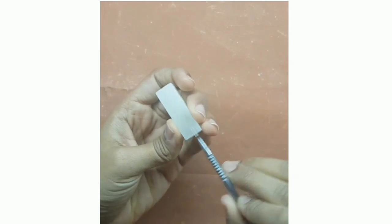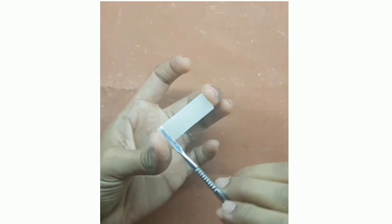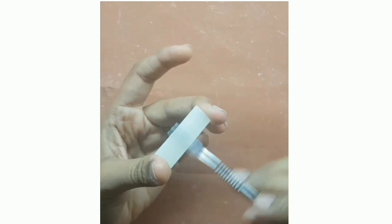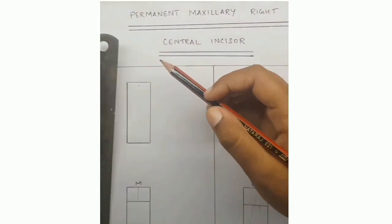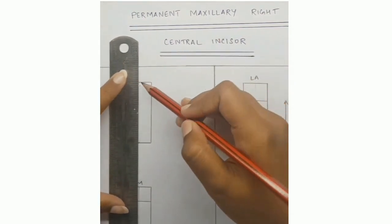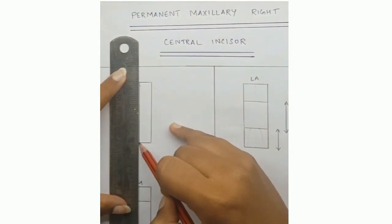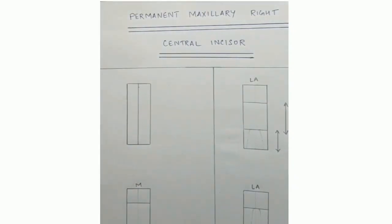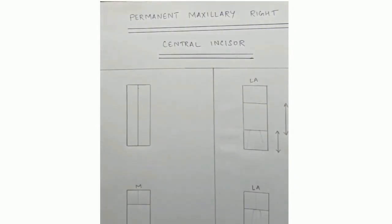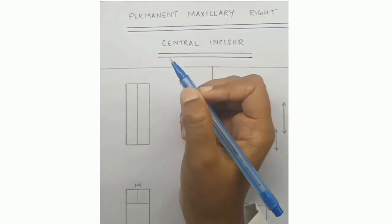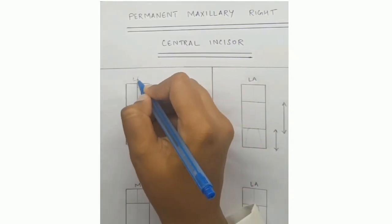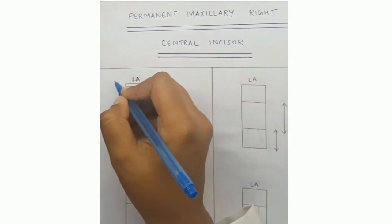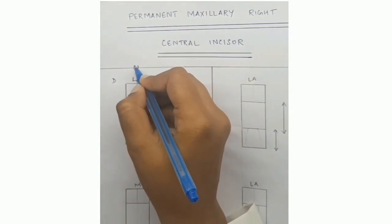First we'll smoothen the wax block to get an even surface. Now we'll start by drawing the midline on all the four aspects and label the labial aspect, mesial aspect, distal aspect, and the lingual aspect.